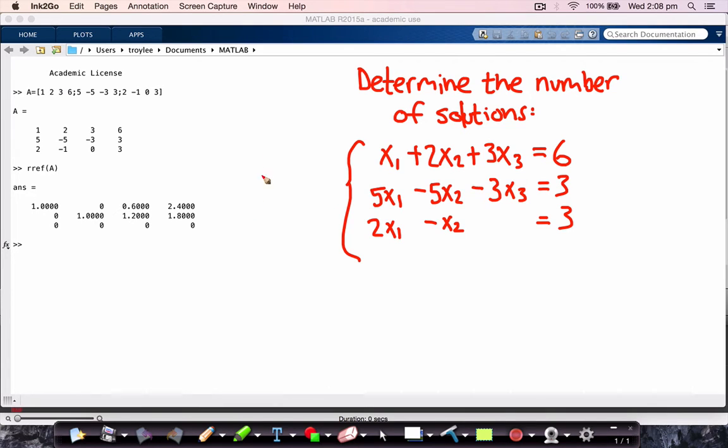So the first thing that we can check is if the system is consistent. And it is because there's only one all-zero row of coefficients, and that corresponds to a zero on the right hand side. So the system is consistent.